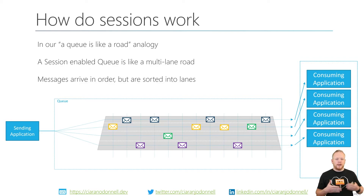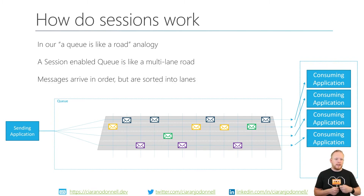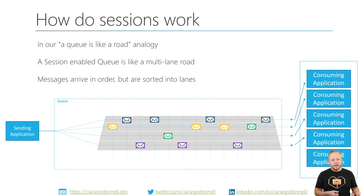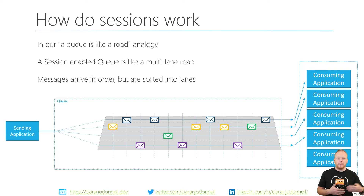If we end up with more consuming applications, we can make it so they each get their own message session. Each application will get a single message session and will only receive the messages in the session it's been allocated. So if the first consuming application connects and gets allocated the blue messages, when it goes back to the broker it won't take the green, purple, or yellow ones — it'll move to the next blue message because that's the session allocated to it. If we have more consuming applications than total sessions, the extra one won't be able to pick up any session and won't get any messages. If one of the other consuming applications fails, its message session will become available, and then another consumer might pick it up and start processing those messages. One lane of traffic on this queue will never be processed by more than one consumer.